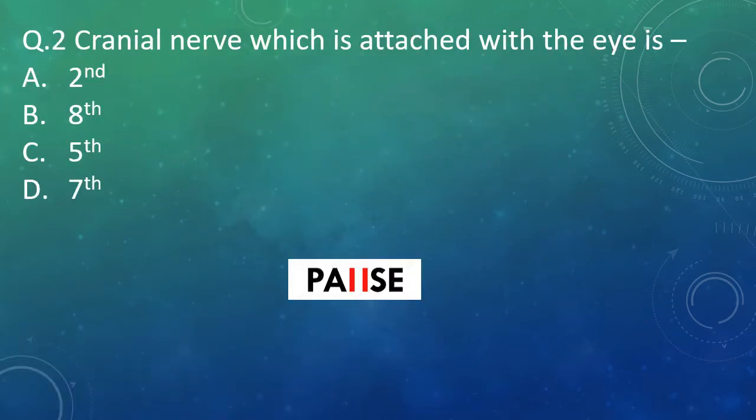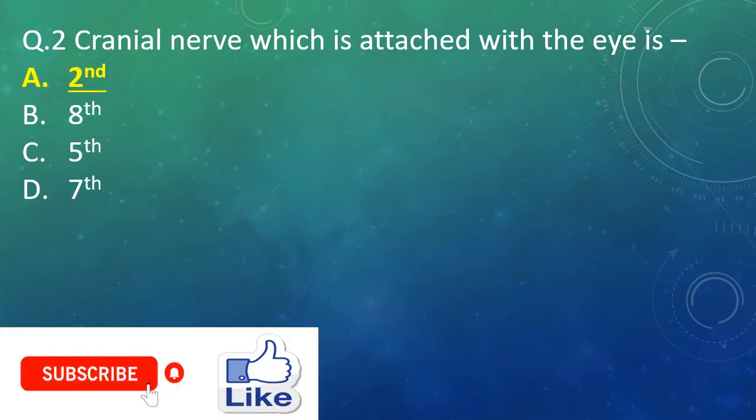Question 2: Which cranial nerve is attached with the eye? Option A: second cranial nerve. Option B: eighth cranial nerve. Option C: fifth cranial nerve. Option D: seventh cranial nerve. And the right answer is Option A — the second cranial nerve.